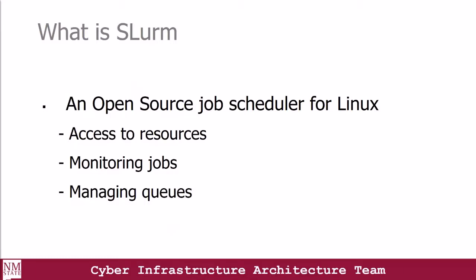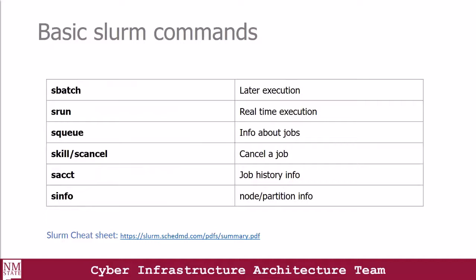SLURM is an open source job scheduler for Linux. It helps give access to resources, for example, access to the compute nodes. It also helps monitor jobs, and provides a mechanism that allows us to manage jobs in a queue. We have basic SLURM commands that come in handy, and these are the commands we use most of the time to manage our jobs.